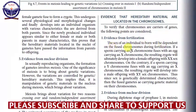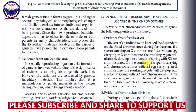If a sperm carrying an X chromosome fuses with an egg carrying an X chromosome, the resulting zygote will ultimately develop into a female offspring with XX sex chromosomes. So if we have a sperm with X and an ovum with X, we will get an offspring that is XX, which means it will be female. On the contrary, if a sperm carrying a Y chromosome fuses with an egg carrying an X chromosome, the resulting zygote will develop into a male offspring with XY sex chromosomes.